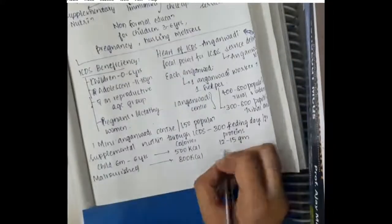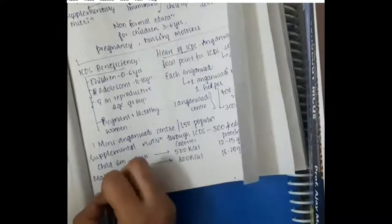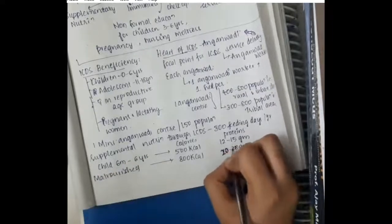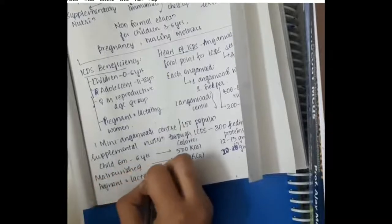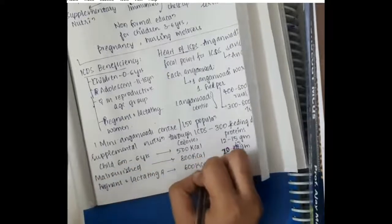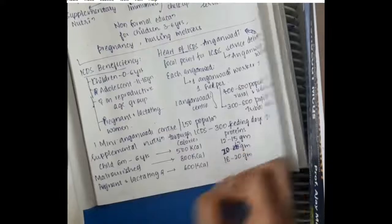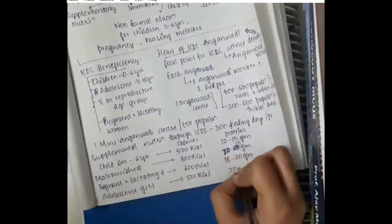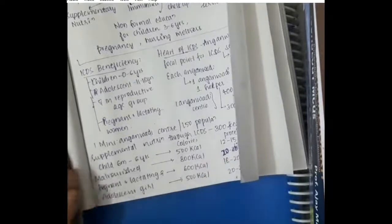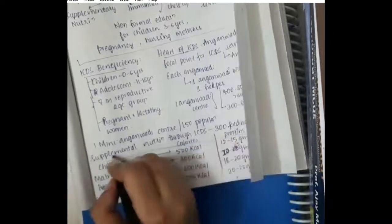Malnourished children are given 800 kilocalories and 20 to 25 grams of protein. Pregnant and lactating females are given 600 kilocalories and 18 to 25 grams of protein.